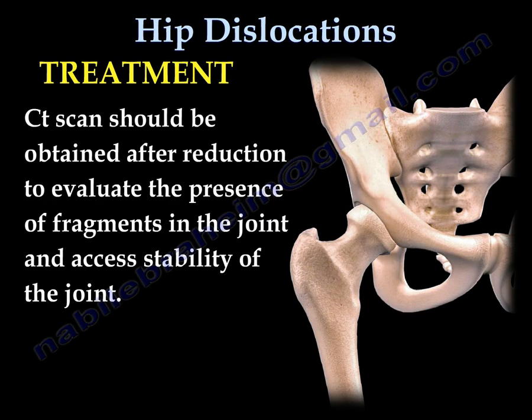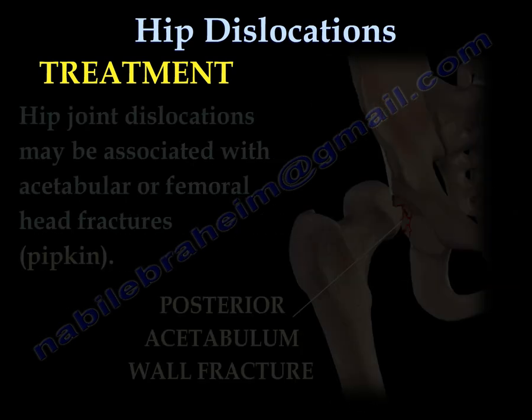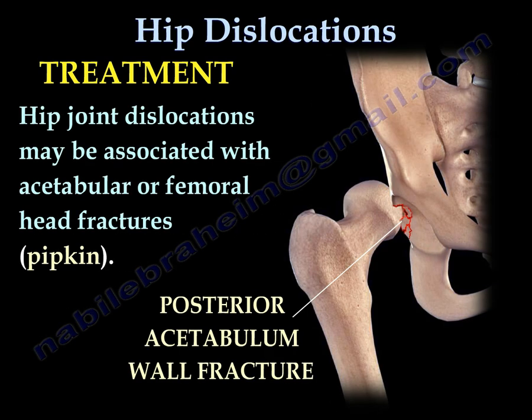A CT scan should be obtained after reduction to evaluate the presence of fragments in the joint and to assess the stability of the hip joint. Hip joint dislocation may be associated with an acetabular fracture or femoral head fractures — we call it a Pipkin fracture. Here is an example showing a posterior acetabular wall fracture.